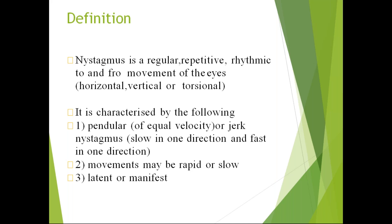Nystagmus can be rapid or slow, and it can be latent or manifest. Latent means hidden — like latent squint. Manifest means when you see a person, you can immediately diagnose that the patient has nystagmus. Latent means it is hidden, and once you break the fusion, then only it will come into action.